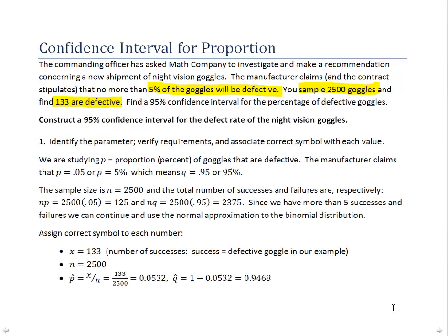We'll begin by constructing a 95% confidence interval for the defect rate of the night vision goggles. As always in these problems, begin by identifying the parameter and verifying the requirements. The parameter in this problem is a proportion or a percent. The symbol we use to represent that is P, and that's the population proportion or percent of goggles that are defective. Of course we don't know what that P is, but we want to estimate it using our statistics.